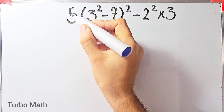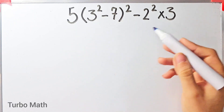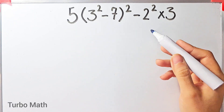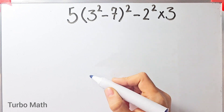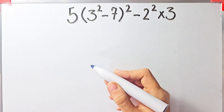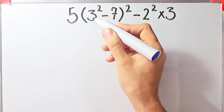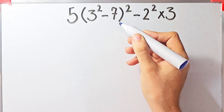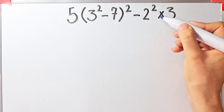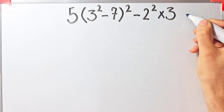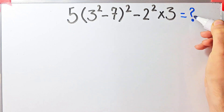Hi friends, welcome to Turbo Math channel. Many people when they see this question don't know which operation to do first, so they might get it wrong. The question is: five times open parentheses three to the power of two minus seven close parentheses, then all of that to the power of two, minus two to the power of two times three. What is the answer? Can you solve it?